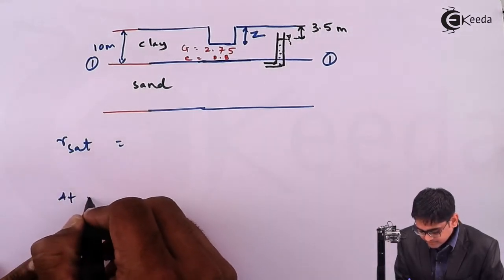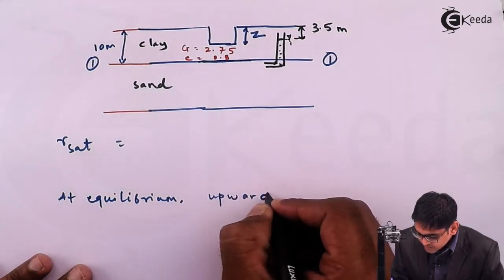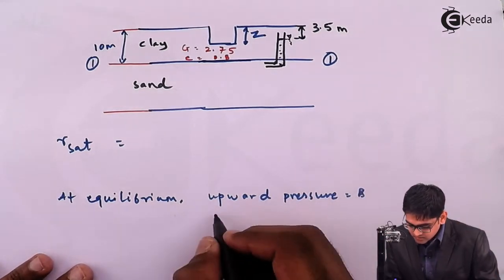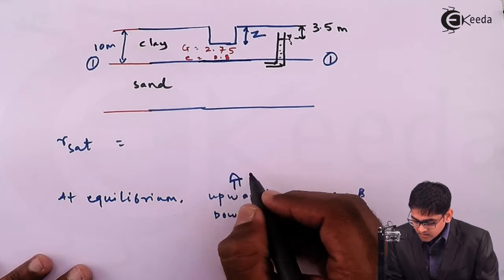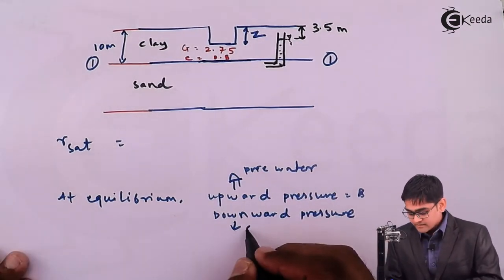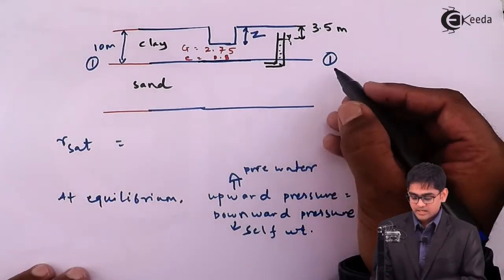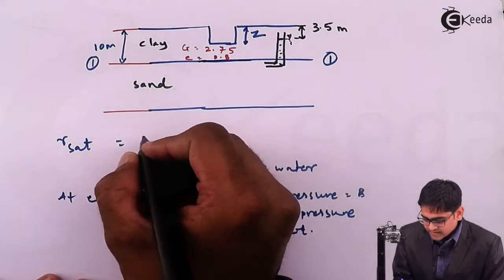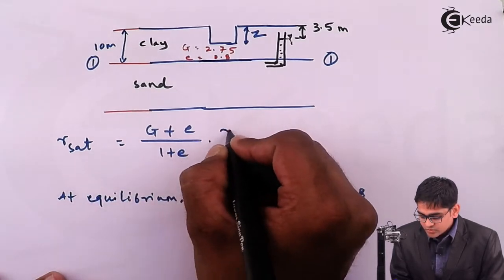At equilibrium, the upward pressure must equal the downward pressure. The upward pressure is given by pore water pressure and the downward pressure (stabilizing) is given by the self-weight of the soil. From the basic definition, the saturated unit weight is: γ_sat = (Gs + E) / (1 + E) × γ_w.